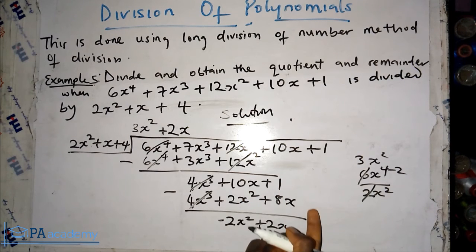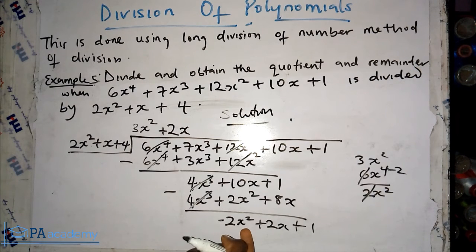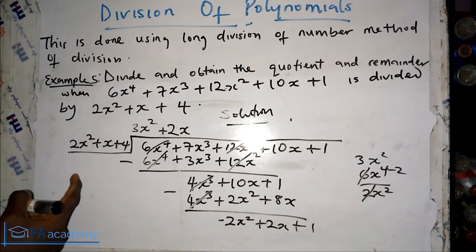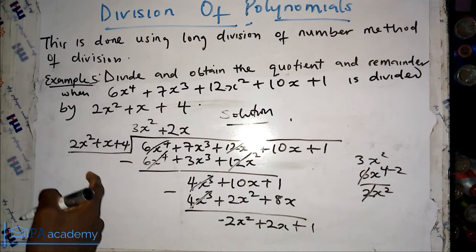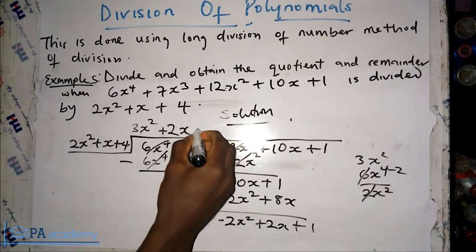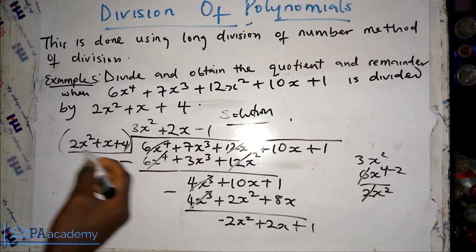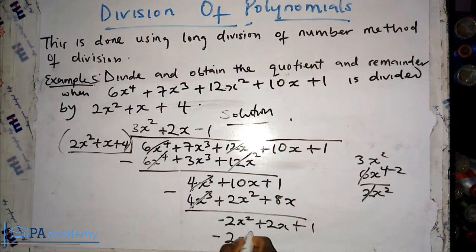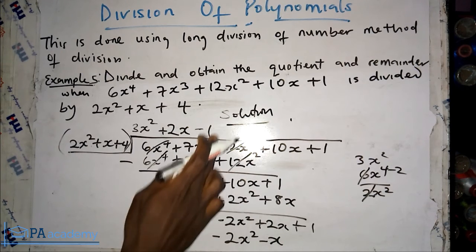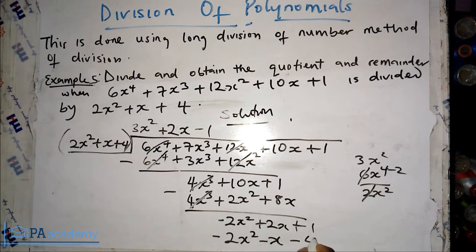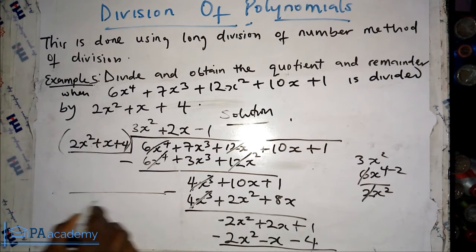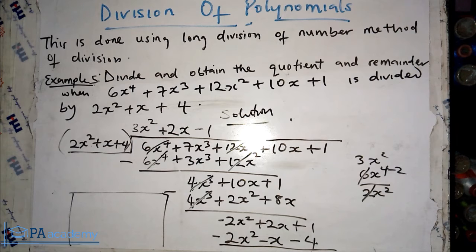The constant plus 1 has nothing to subtract from, so we bring it down as plus 1. Now we divide minus 2x² by 2x², which gives us minus 1. We add minus 1 to the quotient and multiply: minus 1 times 2x² gives minus 2x², minus 1 times x gives minus x, and minus 1 times 4 gives minus 4. Let's subtract.